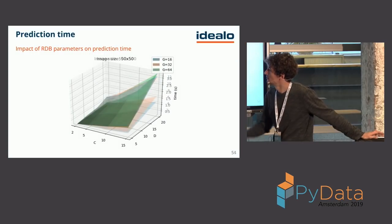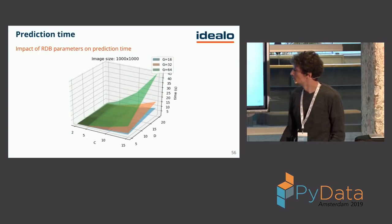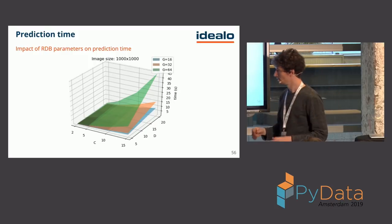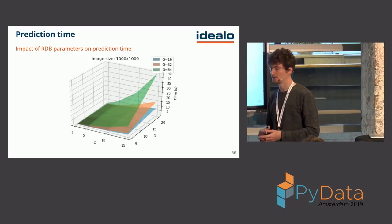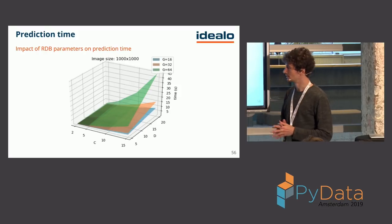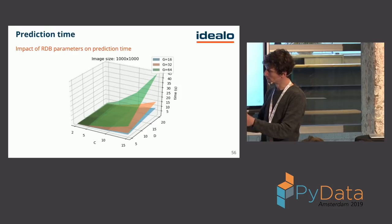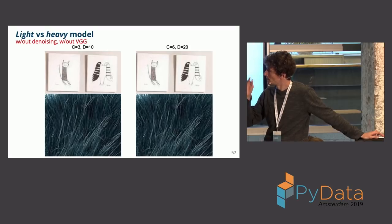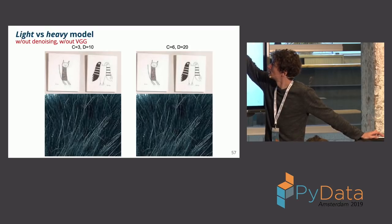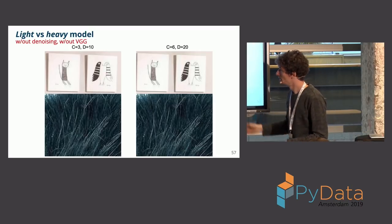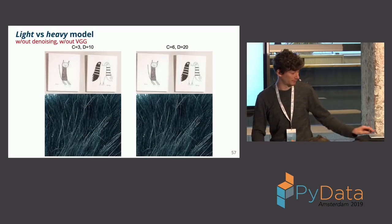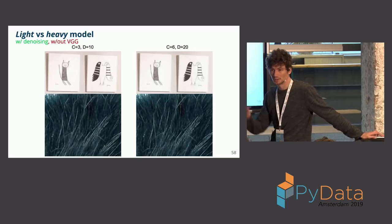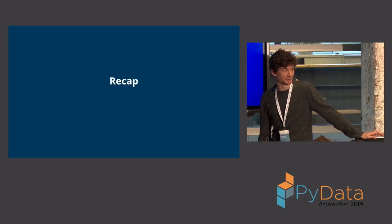On prediction times: the block width parameter C influences prediction time quadratically, while the number of blocks D influences it linearly, and the effect is more pronounced on larger images. Our original network used C=6 and D=20 — 120 layers total. Halving both C, D, and the feature maps achieves a roughly 10× speedup with only a small perceptual quality drop.